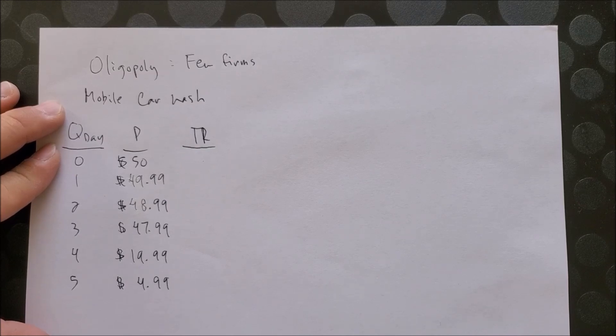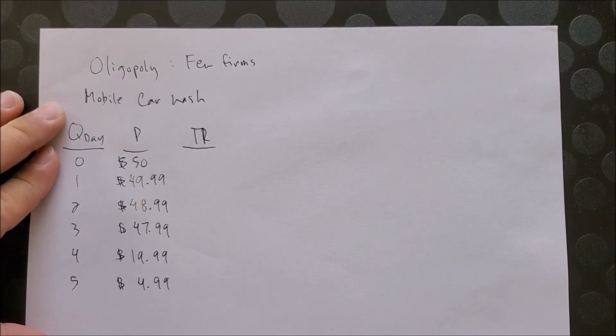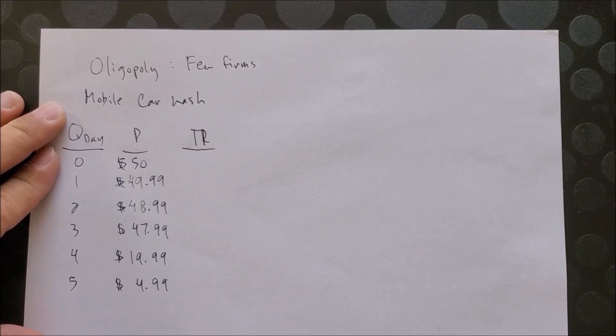For oligopolies, you could even look at the vehicle industry in the United States. We have the big three American makers: Ford, GM, and Chrysler. In the telecommunication industry we have AT&T, Verizon, Sprint, and T-Mobile. So we see a lot of examples of oligopoly today.